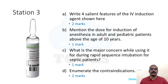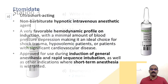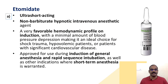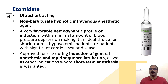Station 3 is all about etomidate. The first sub-question asks for four salient features: it is an ultra short-acting, non-barbiturate hypnotic intravenous anesthetic agent. Etomidate has a very favorable hemodynamic profile on induction with minimal hypotension, making it an ideal choice for shock, trauma, hypovolemic patients, or patients with significant cardiovascular disease. It is approved for use during induction of general anesthesia and rapid sequence intubation.